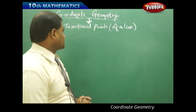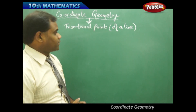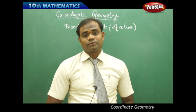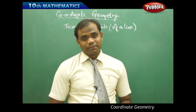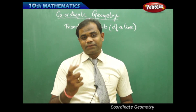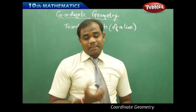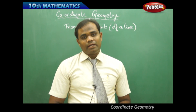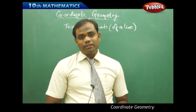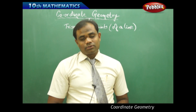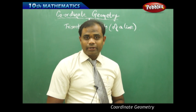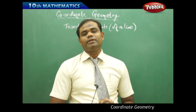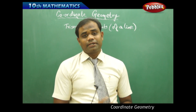The next topic of the session is trisectional points of a line. What do you mean by trisection? Tri means three, and section means part of. So a line which is divided equally into three parts — trisectional points are the points which divide the line into three equal parts or three equal sections.